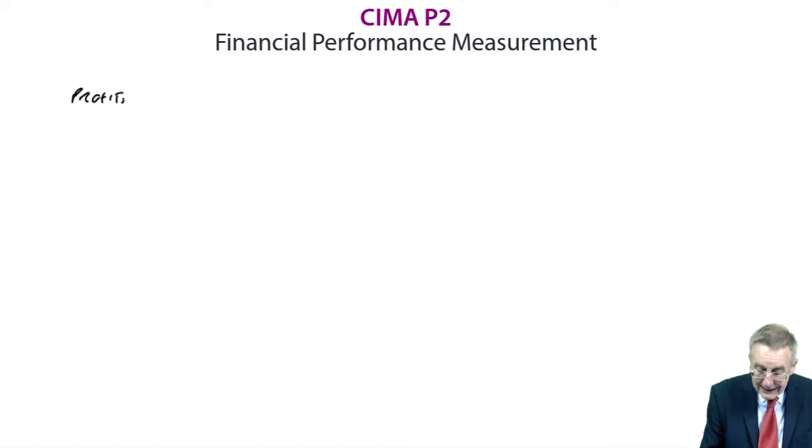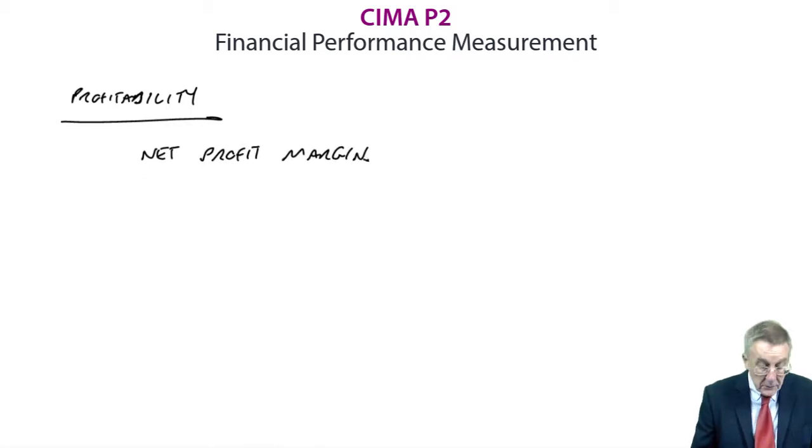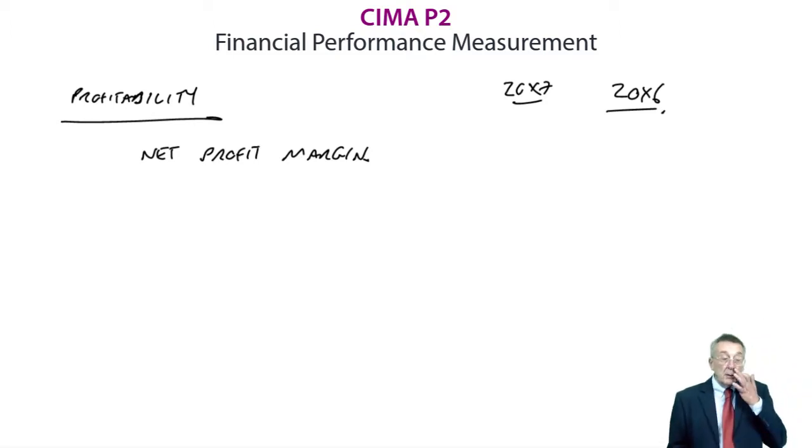So let's go through, first of all, the profitability ratios. The first one, the net profit margin. We'll do both, I'll put them side by side, this year, last year. The net profit margin is the profit before interest and tax divided by, as a percentage of, the revenue. Now, some people get a bit upset here because in other contexts, particularly in financial accounts, net profit tends to mean the very final profit, which here would be 478 in 20x7. However, for reasons I will explain in a minute, in these ratios, more sensibly, net profit is the net operating profit. The profit before charging interest and before charging tax.